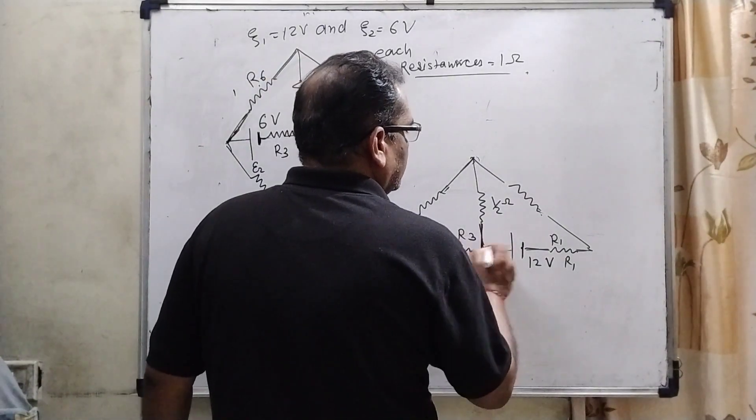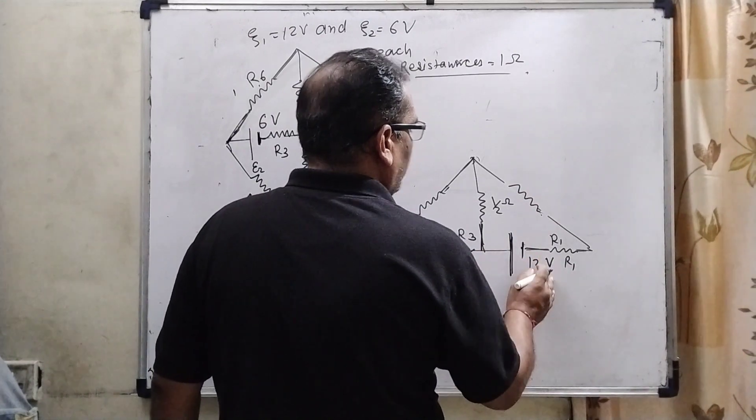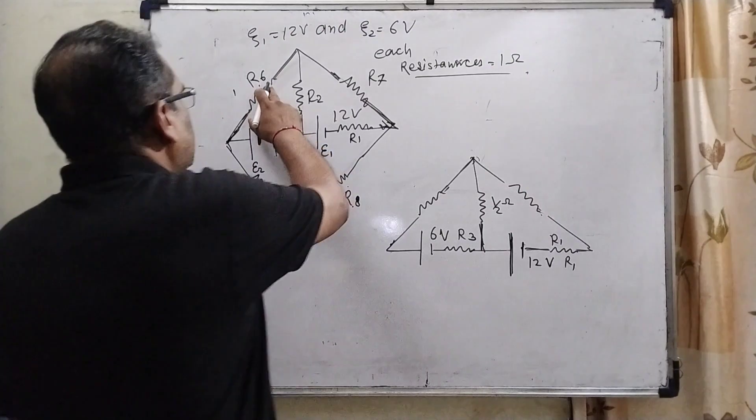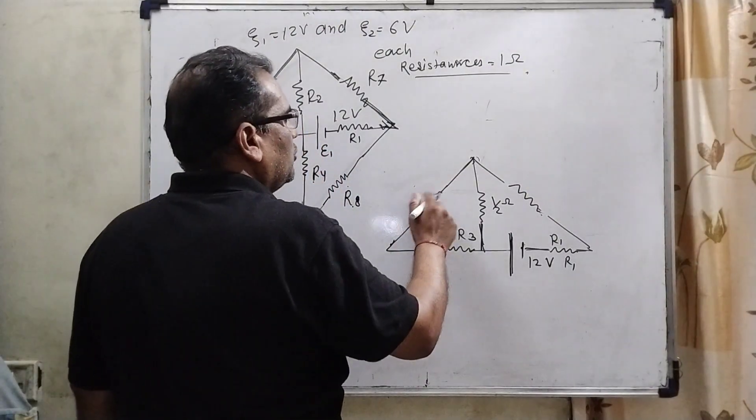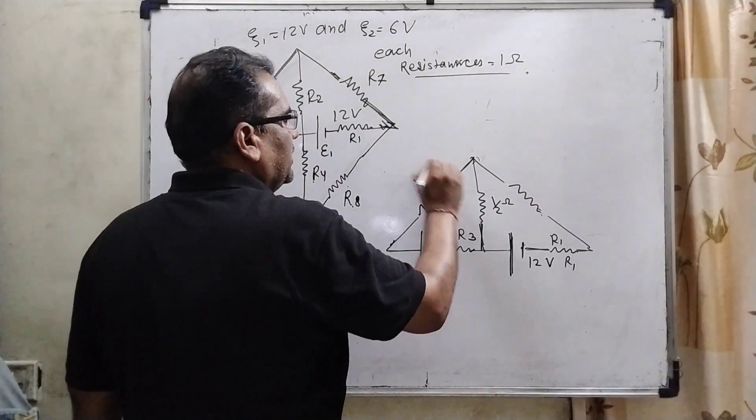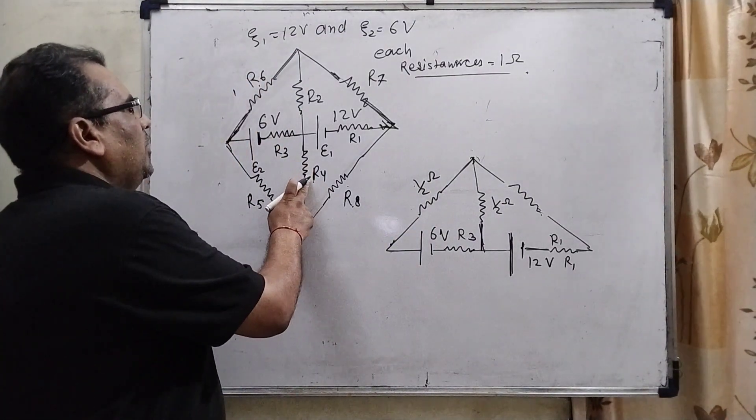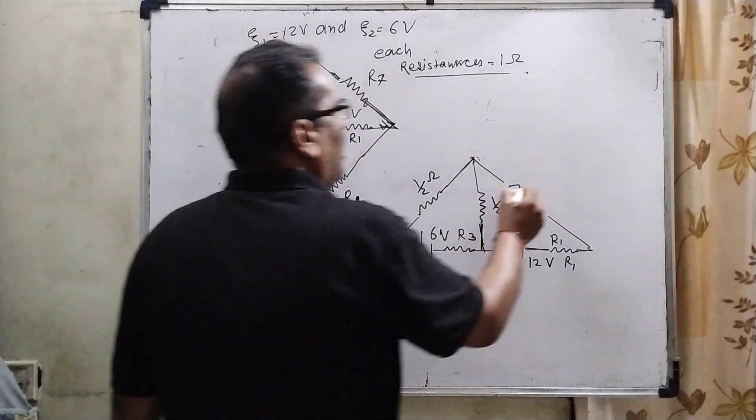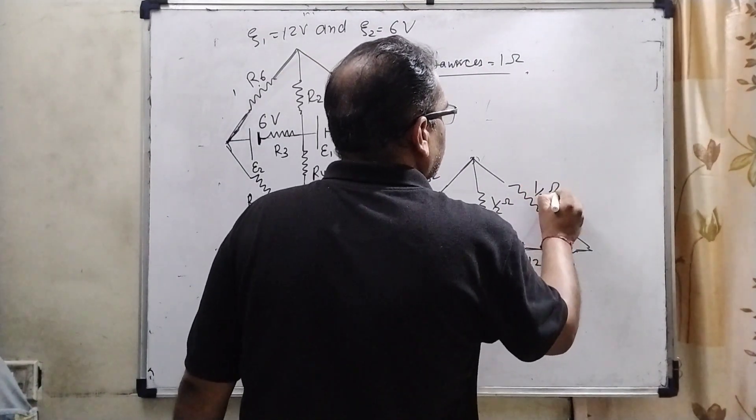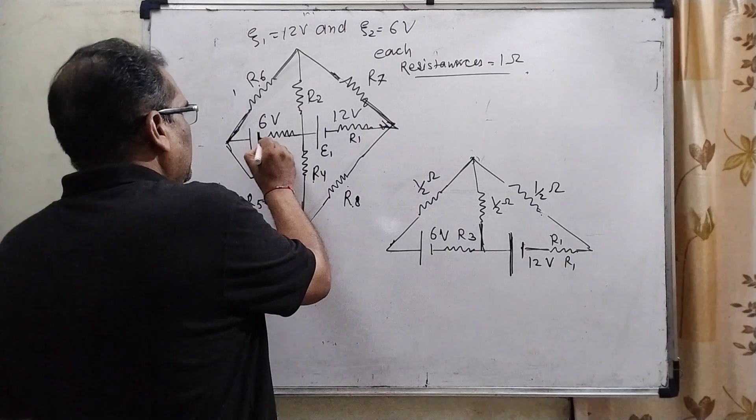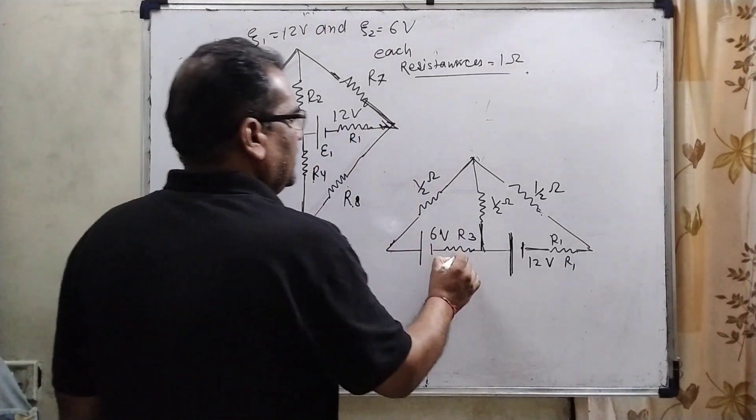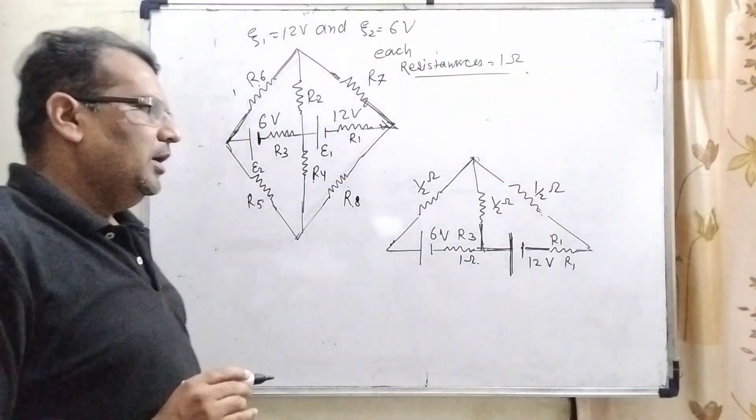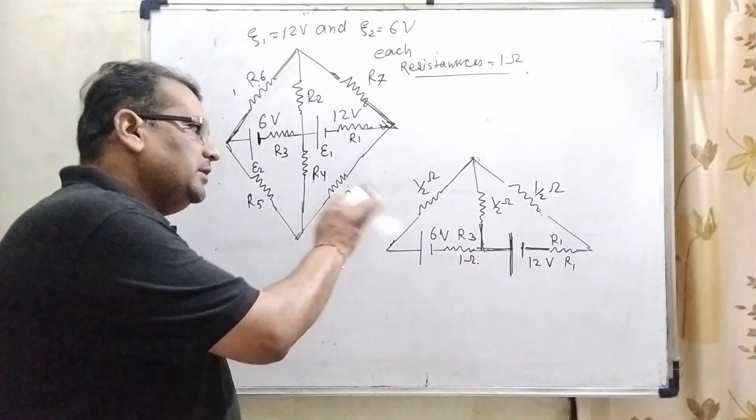Now, I have drawn this circuit. That is 12 volt battery, here 6 volt battery. Here, this resistance is 1 ohm and 1 ohm. Now it is parallel, so therefore it becomes half ohm resistance. Here, 1 ohm and 1 ohm also become half resistance. Here, 1 ohm and 1 ohm, half ohm resistance. Only this R3 and R1 is unchanged, because here is the folding line. I hope you understand this concept.